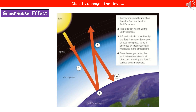Those greenhouse gas molecules then emit infrared radiation in all directions, leading to the warming of the Earth's surface and the atmosphere. This is really important because the greenhouse gases in our atmosphere mean that we can trap enough heat to allow living things to exist. So we do need some greenhouse gases in our atmosphere to allow life on Earth.